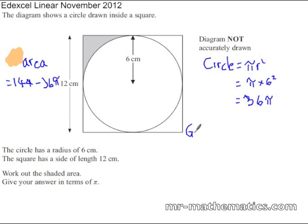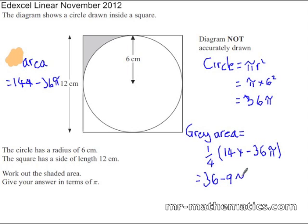the grey region or the grey area will be 1 quarter of 144 minus 36 pi. So if we divide each term by 4, 144 divided by 4 is 36, and negative 36 pi divided by 4 is negative 9 pi.